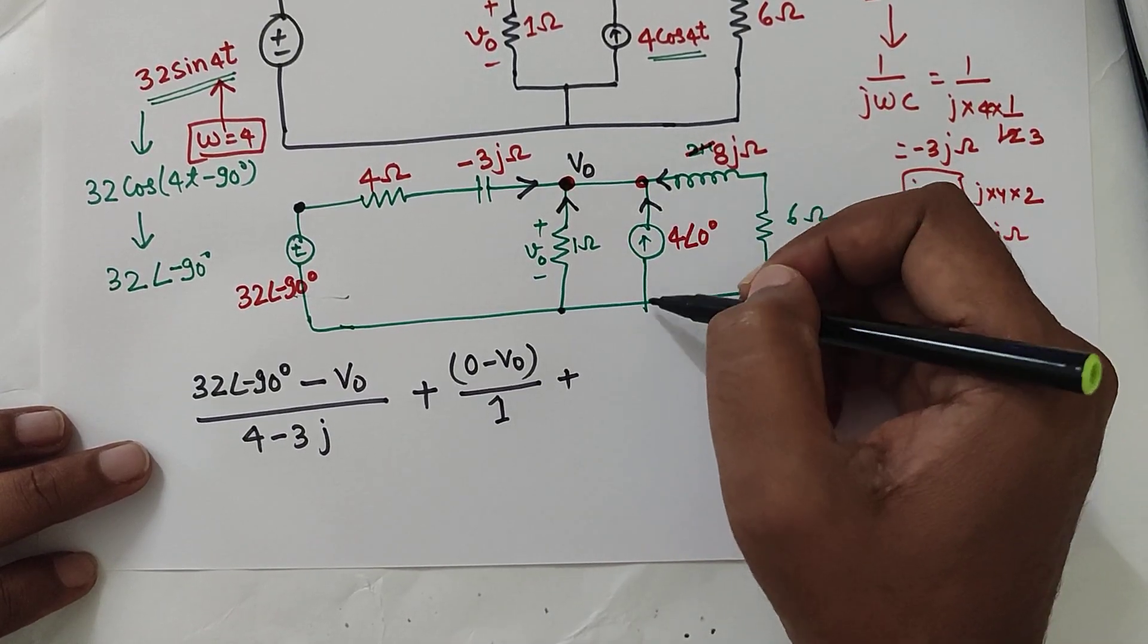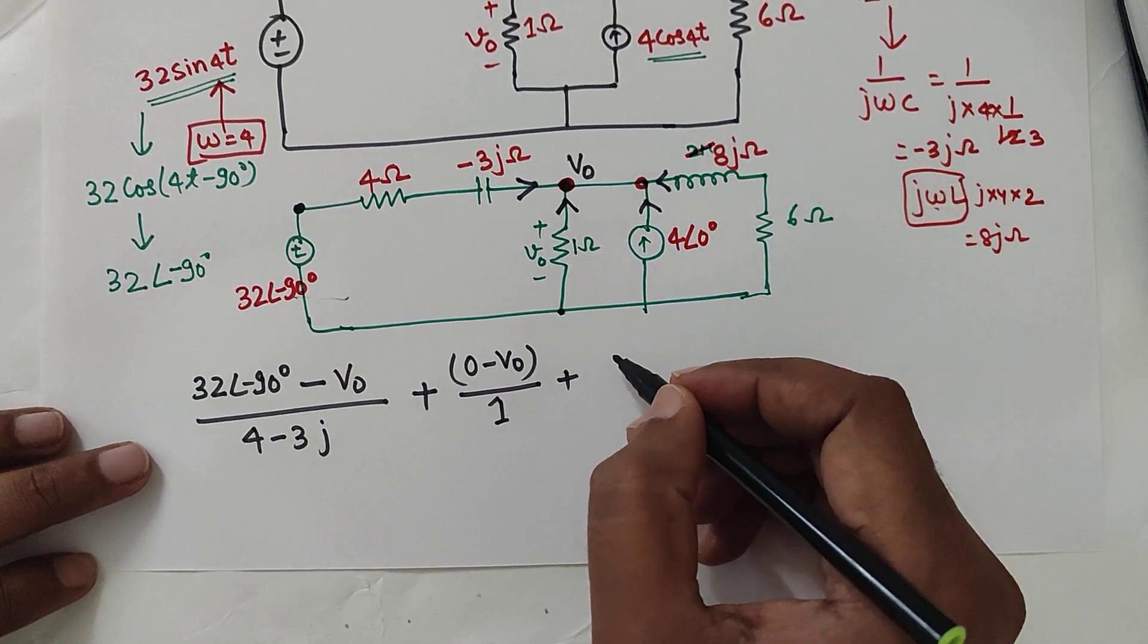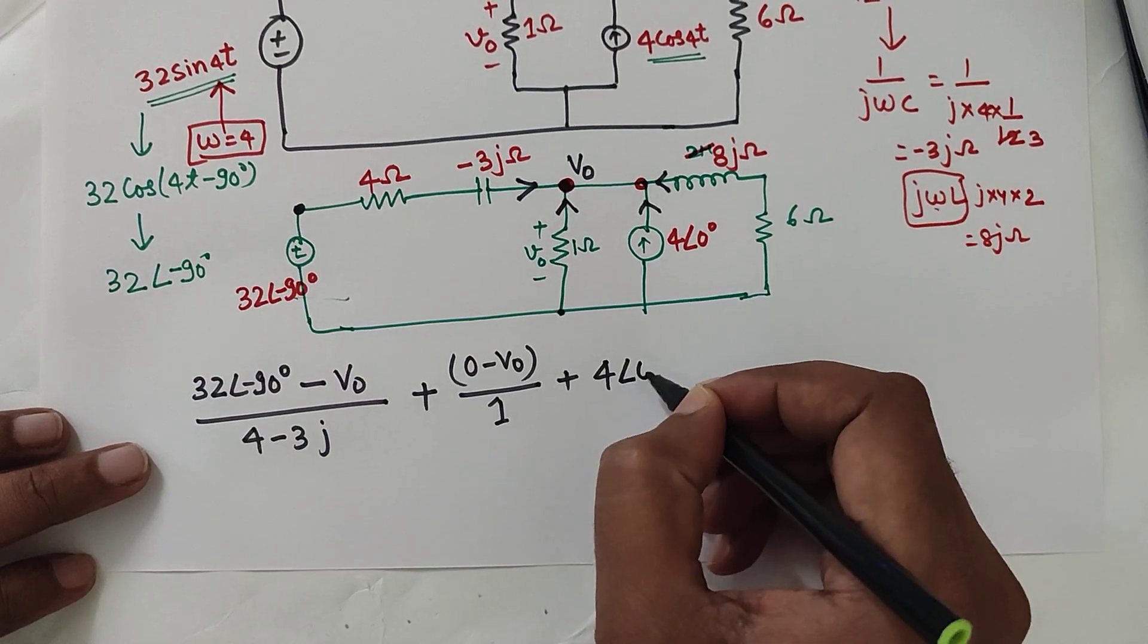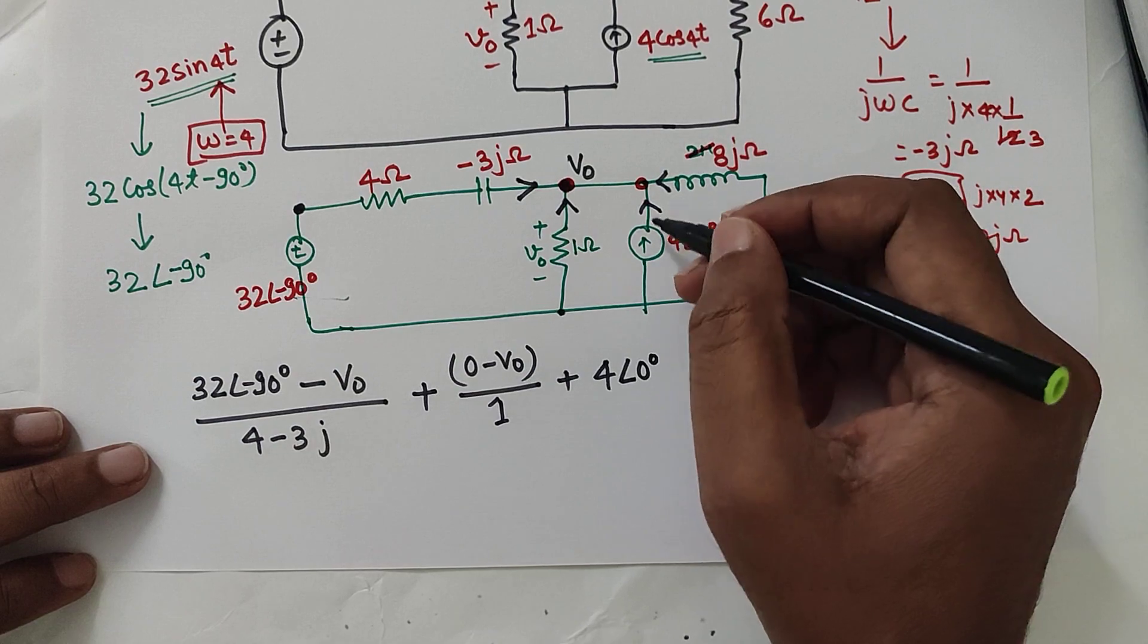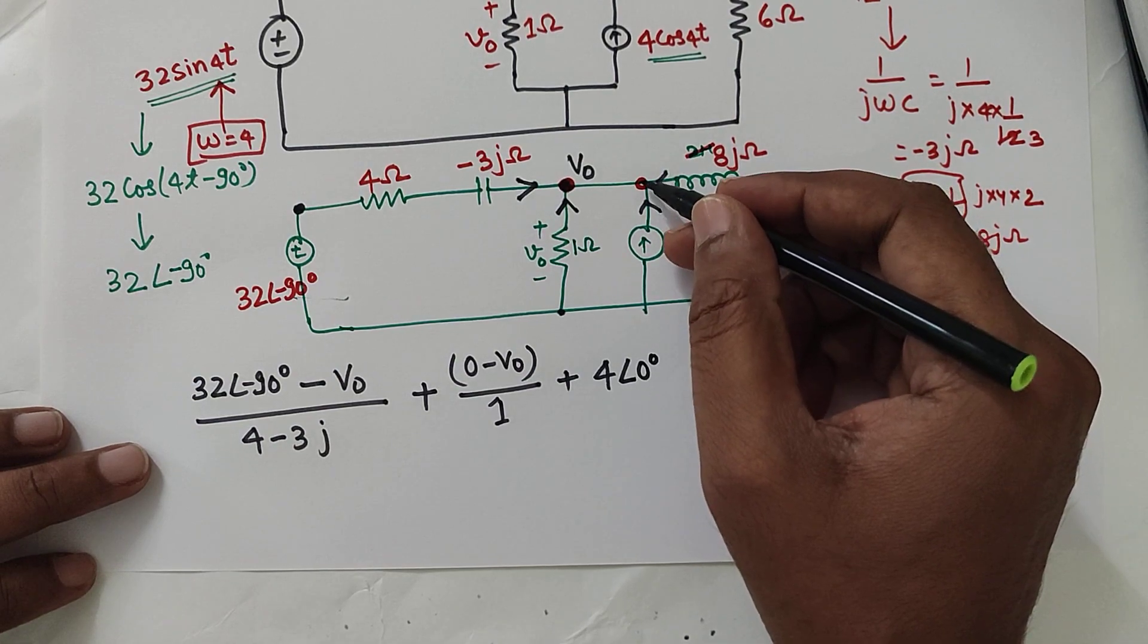Plus this is also incoming. So 4 angle 0 is incoming. This is the current already given in terms of current source. So I can directly write 4 angle 0. Current is incoming.